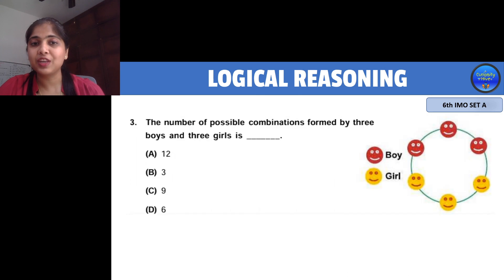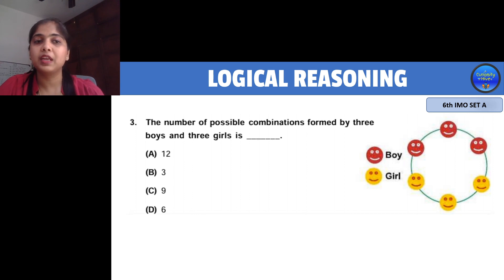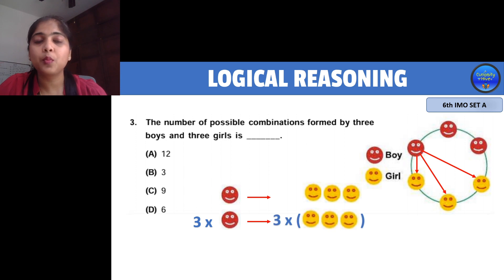Let's go to the next question. Your timer starts now. In this combination question, they are asking to find the possible combinations formed by three boys and three girls. If you look carefully, one boy can be paired up with three girls in three ways. So three boys can be paired in three times three, which equals nine, which is option C.